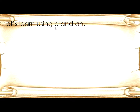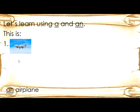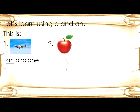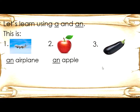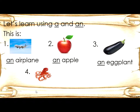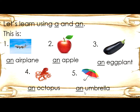Let's learn using A and AN. Number one: an airplane. Number two: an apple. Number three: an eggplant. Number four: an octopus. Number five: an umbrella.